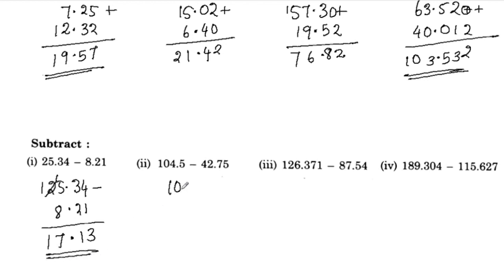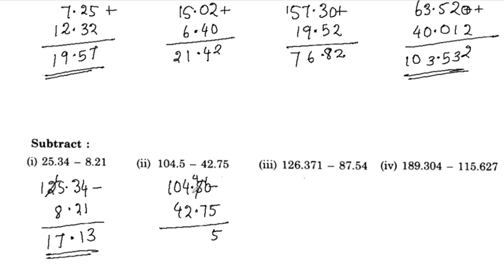104.5 minus 42.75: 10 minus 5 is 5, 15 minus 7 is 7 (with borrowing), 3 minus 2 is 1. 10 minus 4 is 6 — so the answer is 61.75.